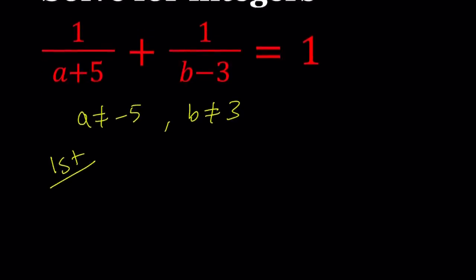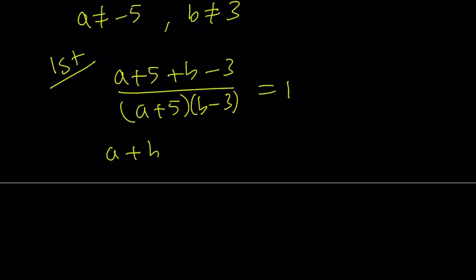So I'll start with the first method. For my first method, I'm just going to make a common denominator. Straightforward, brute force. Multiply crisscross applesauce. You're going to get a plus 5 plus b minus 3 divided by the product, which is a plus 5 times b minus 3. But that equals 1, so we might as well just write the whole thing together. A plus b plus 2 is equal to the product.